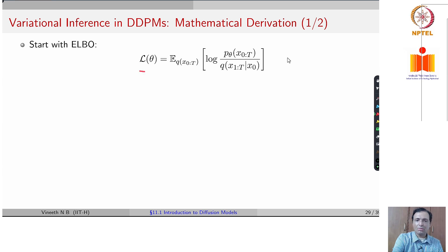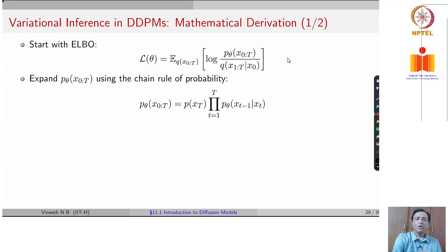Let us look at how this can be derived very similar to your variational autoencoders. You begin with your evidence lower bound, which is p theta of x0 to t divided by x1 to t given x0. You expand p theta of x0 to t through the product of the individual conditional probabilities.